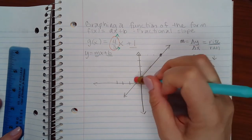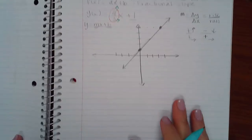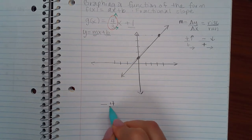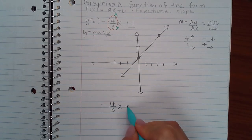And that is how you draw a graph using the slope. Now, just as an example, had it been negative 4 thirds x plus 1,